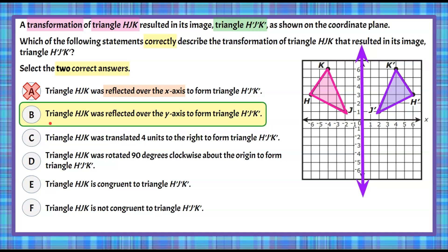Now we need one more correct answer. Answer choice C says triangle HJK was translated four units to the right. Taking every vertex and sliding it four units to the right gives a translated image that is clearly not H'J'K' — it's a very different triangle. So answer choice C is not correct.